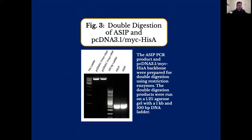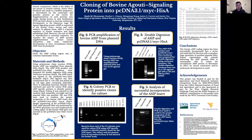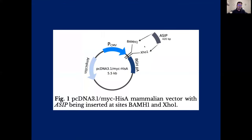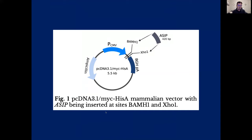The products were then excised from the gel and placed into a ligation together. ASIP was ligated into the backbone, as illustrated here in figure one. You can see that the ASIP insert is being stitched into place at the BamH1 and XhoI sites of the plasmid. The other important thing to note here is the ampicillin resistance gene — any bacteria transformed with this plasmid should be able to survive on a plate containing ampicillin.